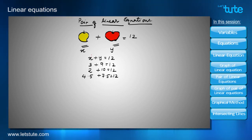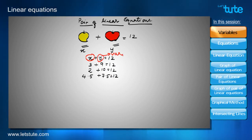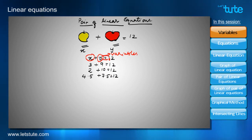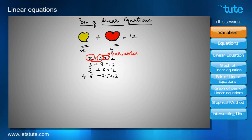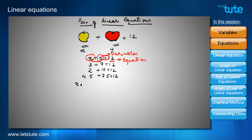Since the values for x and y are varying from time to time, they are called variables. We can also see the equals sign, which shows that the left hand side and right hand side values are equal — therefore this mathematical expression is called an equation.